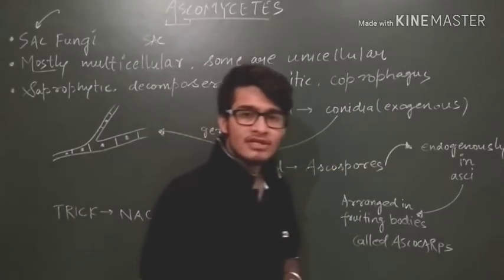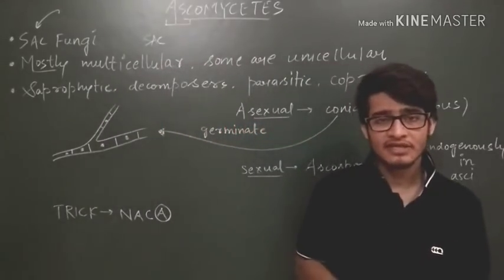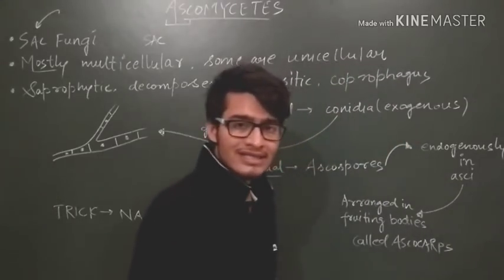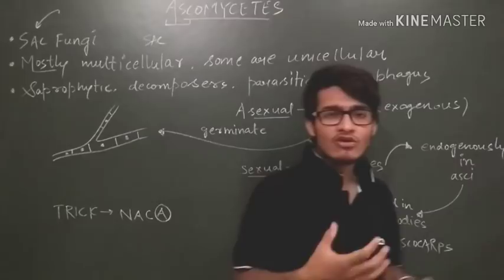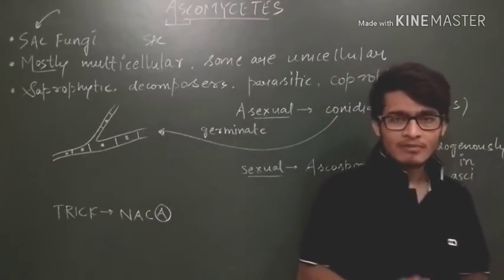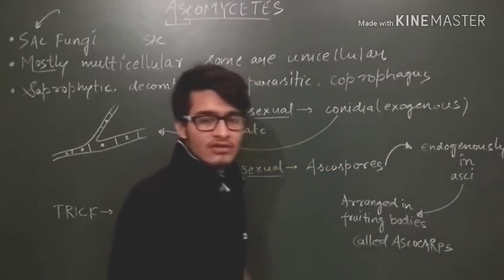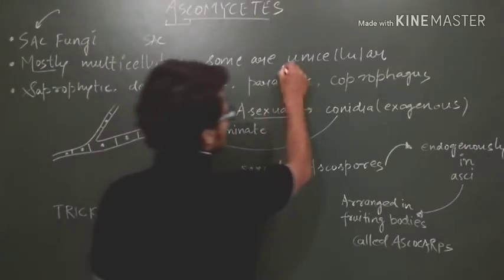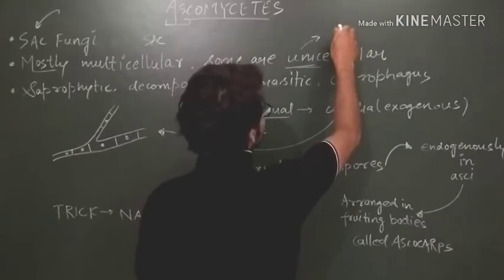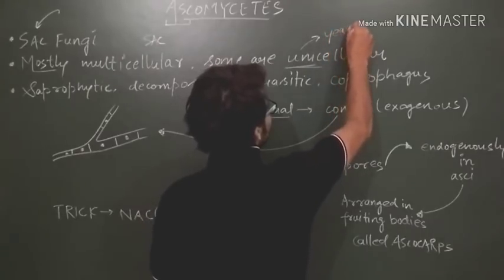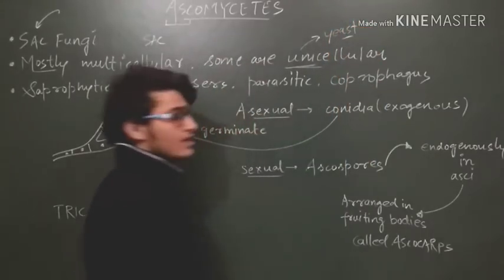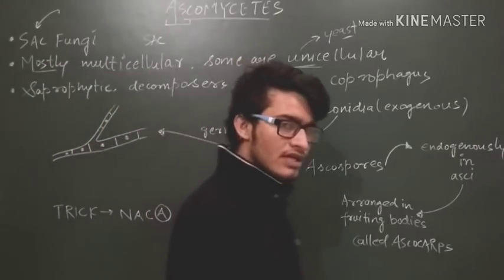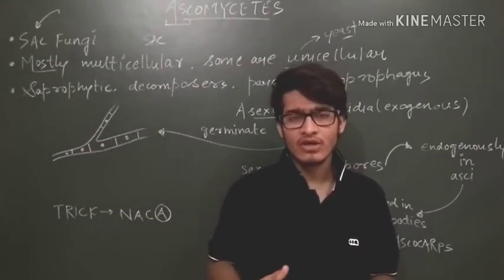We have already completed a chapter which is very interesting - microbes in human welfare - where we discussed yeast, that is Saccharomyces cerevisiae. We talked about baker's yeast which is very helpful in the fermentation process. So that yeast is unicellular.